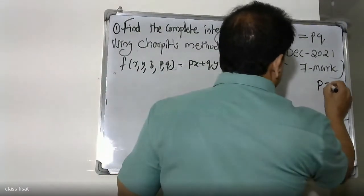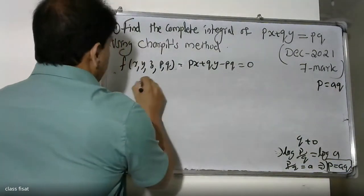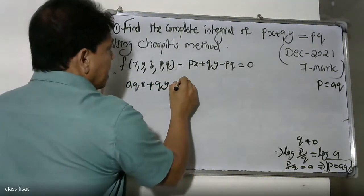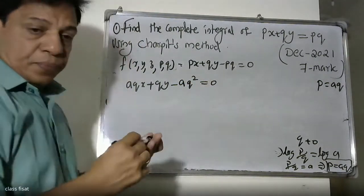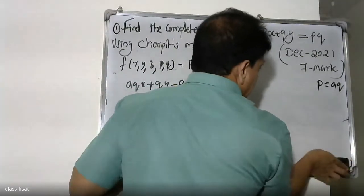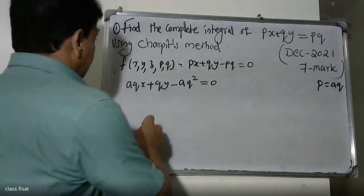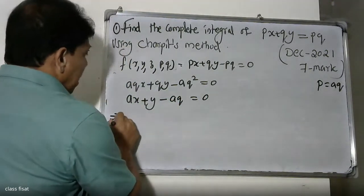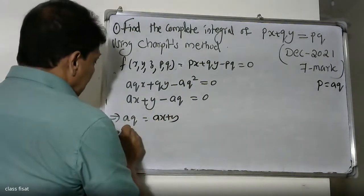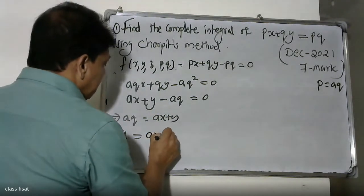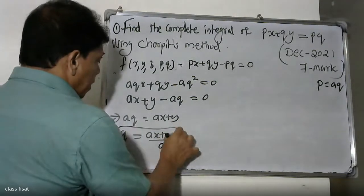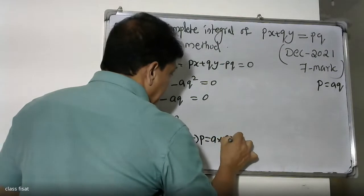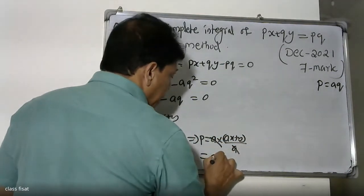We are going to substitute p equal to aq. Substituting into the original equation: aq times x plus q times y minus aq squared equals zero. Factoring out q: q times (ax plus y minus aq) equals zero. So aq equals ax plus y, giving q equals (ax plus y) divided by a. Then p equals aq equals ax plus y.